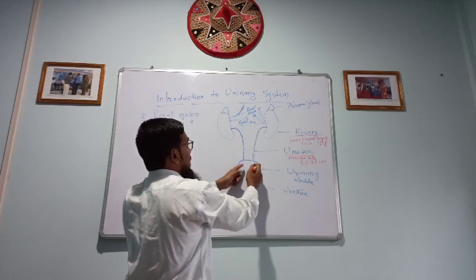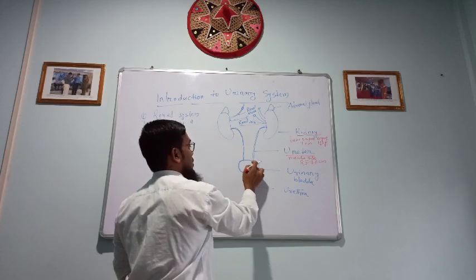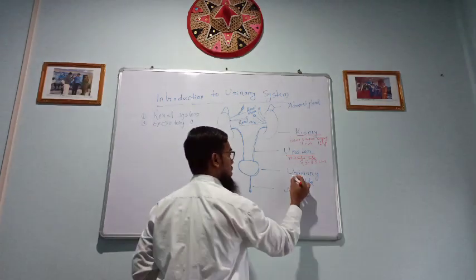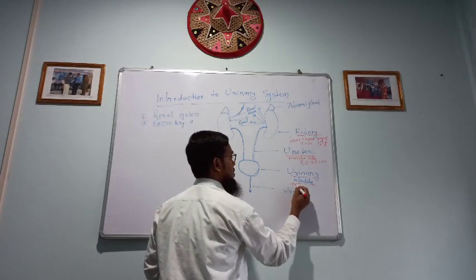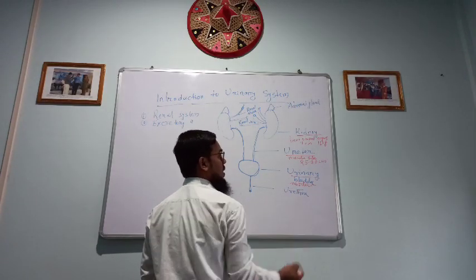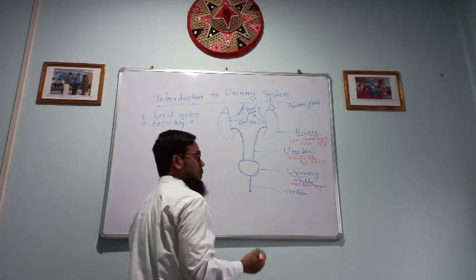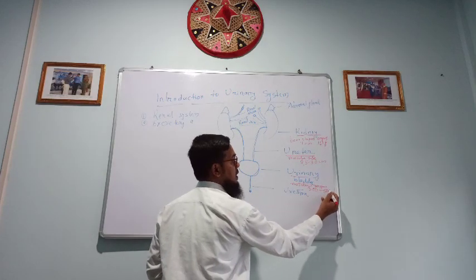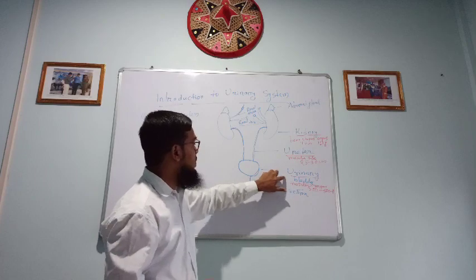Both ureters will collect urine from both kidneys and store in urinary bladder. Urinary bladder is a bladder type organ which is made up of smooth muscle, a muscular organ, and its capacity is around 300 to 500 ml. So we understood urinary bladder.